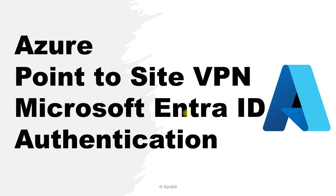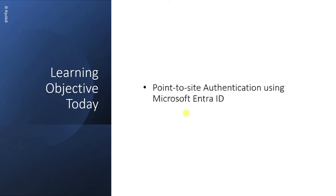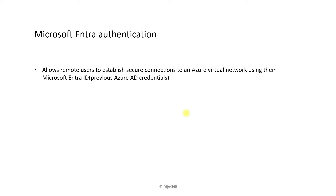Hi friends, I am Rijo and today I plan to cover the topic of Azure Point-to-Site VPN with Microsoft Entra ID authentication. Today we are discussing Point-to-Site authentication using Microsoft Entra ID. This topic is a continuation of my previous videos — the link is in the description below. Microsoft Entra authentication allows remote users to establish a secure connection to an Azure virtual network using their Microsoft Entra ID, previously called Azure AD credentials.